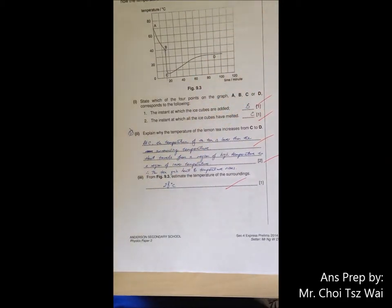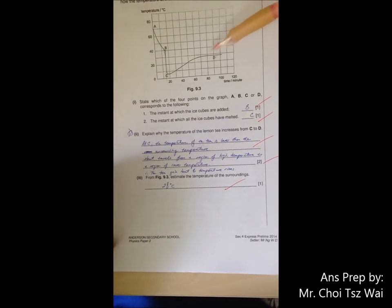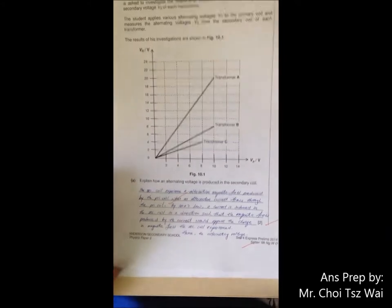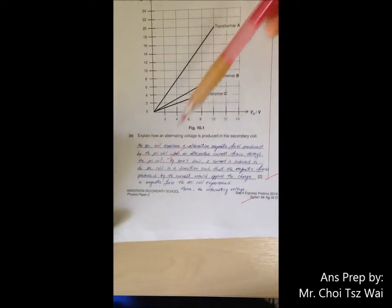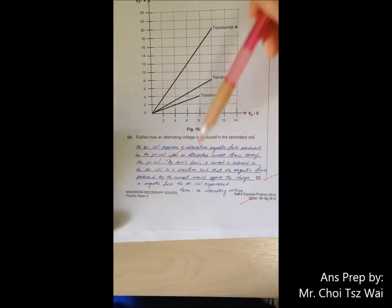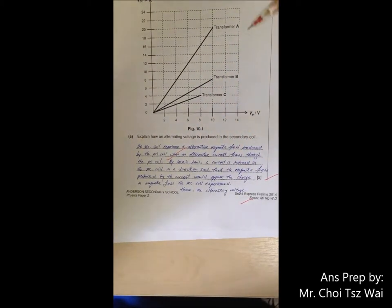And of course, the last question, what is the surrounding temperature? D, whereby it is constant. Question 10. Question 10 A is your typical explanation. This one refer to the book.